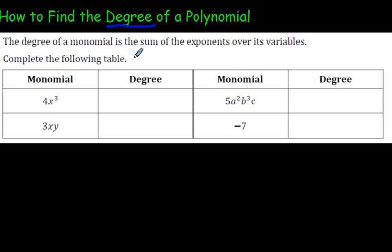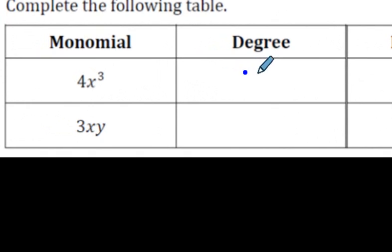The degree of a monomial, which we know is a single term like we see here, is the sum of the exponents over its variables. What that means is you look at the exponents of the variable, so x to the power of 3, x cubed as some people say, and there's no other variables, so the degree of this one would just be 3.